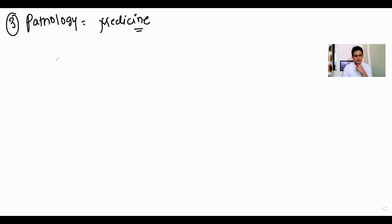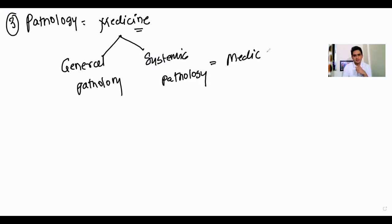Pathology can be divided into two parts: general pathology and systemic pathology. Systemic pathology questions usually overlap with medicine. If you divide this into two parts, you'll realize that most questions are from general pathology. Initial few chapters are where most information comes from, so your main focus should be on general pathology.